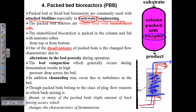This is the basic idea of the packed bed bioreactor. Now there are some major disadvantages. Alteration in the bed porosity can happen, and bed porosity alteration can lead to the compaction of the bed materials. You can make this bed with different materials — it could be wood chips or many inert materials. As a result of bed compaction, the pores available between the beads will get smaller so that the water can be locked.